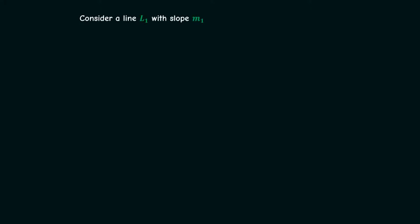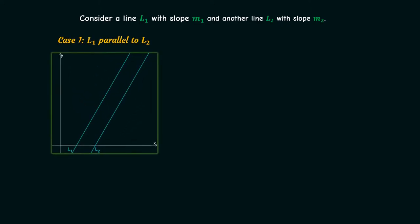Consider a line L1 with slope m1 and another line L2 with slope m2. We will now see the relation between m1 and m2 in two special cases. The first case is that L1 is parallel to L2. In this case both lines will have the same slope, i.e., m1 equals m2.